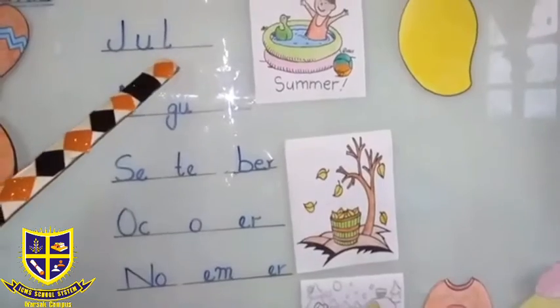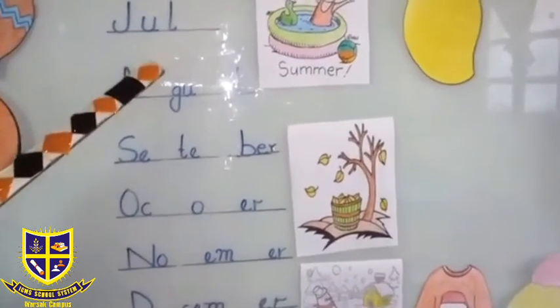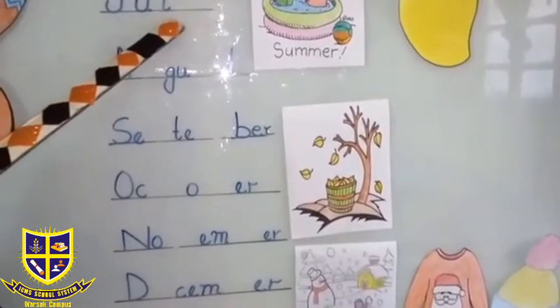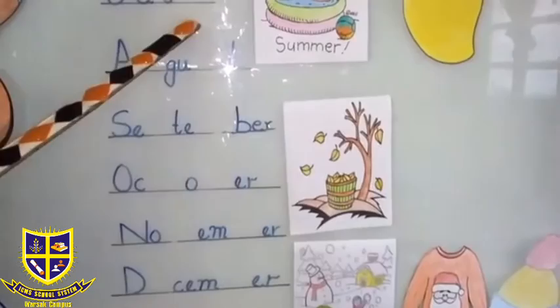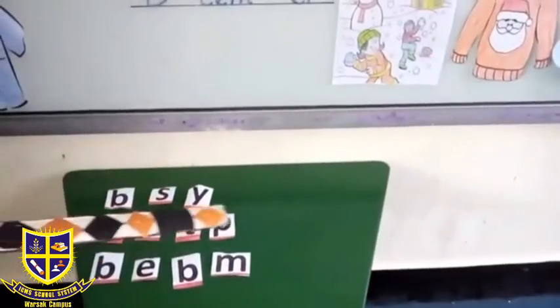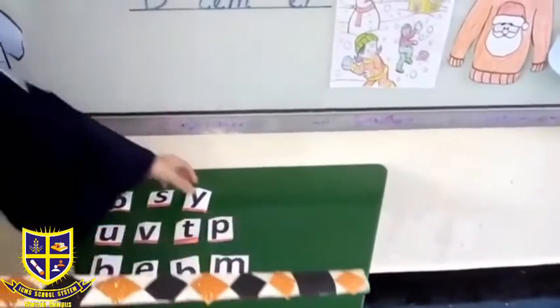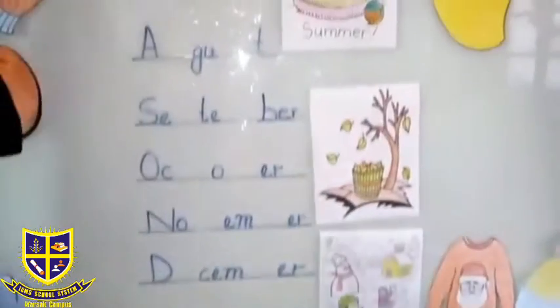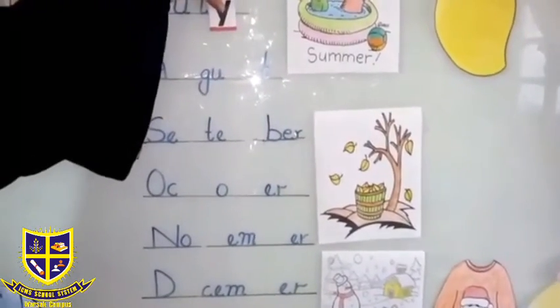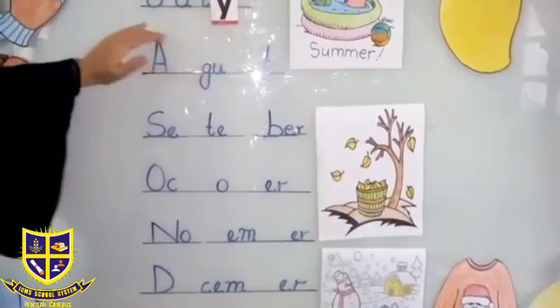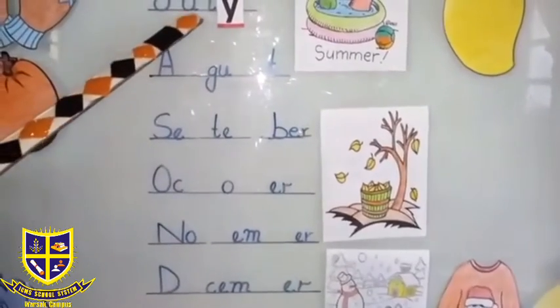Now we have the seventh month of the year. Its name is July. So now we will see which letter in July is missing — it is Y. Y's alphabet is missing, so we will place Y here. July.